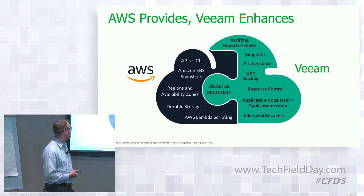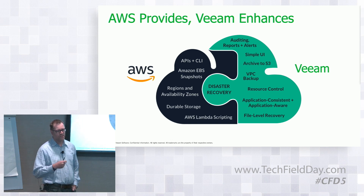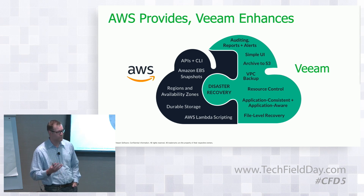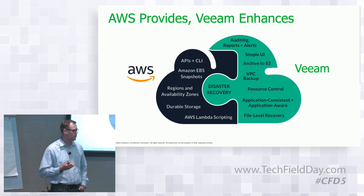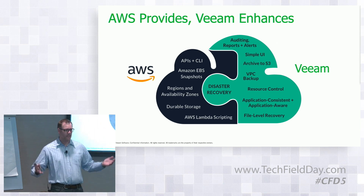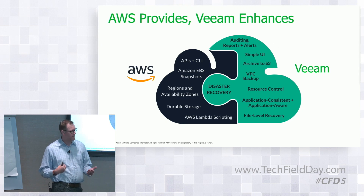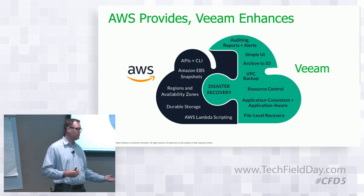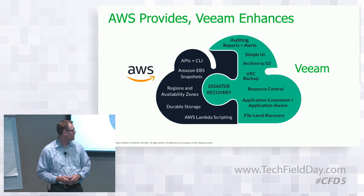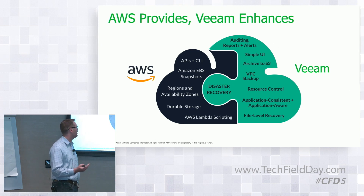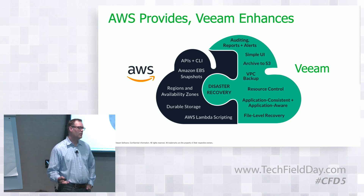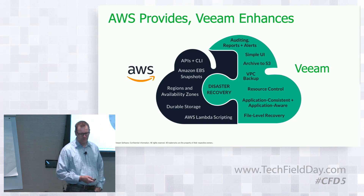One of the core use cases is VPC backups — actually protecting all the configuration options in your Virtual Private Cloud, such as subnets and security groups. In a large production environment, losing that or someone deleting security groups can become very problematic. Being able to restore and clone those to different regions is a big use case, along with file-level recovery and application-consistent, application-aware backups through agents in N2WS.